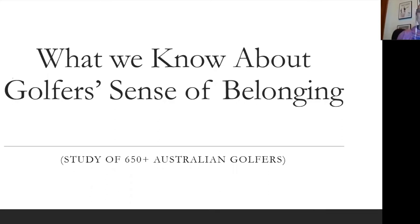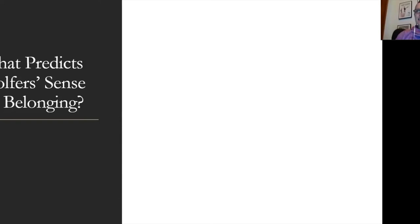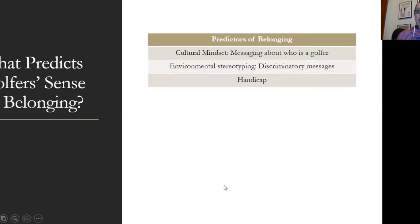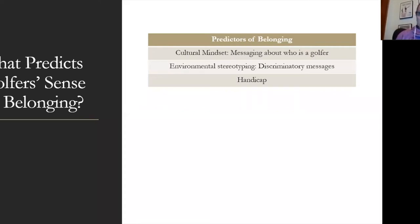We looked at these pillars when studying Australian golfers to understand their experience. In partnership with Golf Australia, we studied 650 golfers and looked at what predicted their sense of belonging. The results were pretty interesting. Predictors of belonging were: perceiving the culture as growth-minded, perceiving the culture as having low levels of environmental stereotyping, and handicap — as handicap went down, sense of belonging went up. So we had cultural mindset, environmental stereotyping, and handicap.